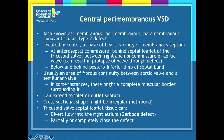The central perimembranous VSD accounts for about 80% of defects. It is also known as membranous, paramembranous, conoventricular, or type II defect. It's located at the center of the base of the heart in the vicinity of the membranous septum — at the anteroseptal commissure between the septal leaflet of the tricuspid valve and the right and non-coronary cusps of the aortic valve on the left side, below and behind the posterior inferior limb of the septal band. There is usually fibrous continuity between the aortic and semilunar valves. The cross-sectional shape may not be round — it can be very irregular — and the tricuspid valve septal leaflet can divert flow into the right atrium, or partially or completely close the defect, sometimes producing a windsock aneurysm.